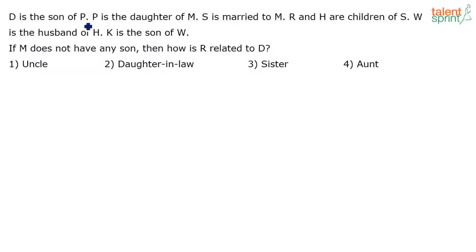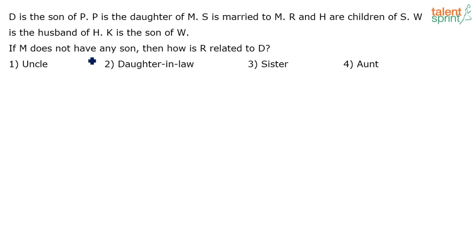D is the son of P. P is the daughter of M. S is married to M. R and H are children of S. W is the husband of H. K is the son of W. If M does not have any son, then how is R related to D?